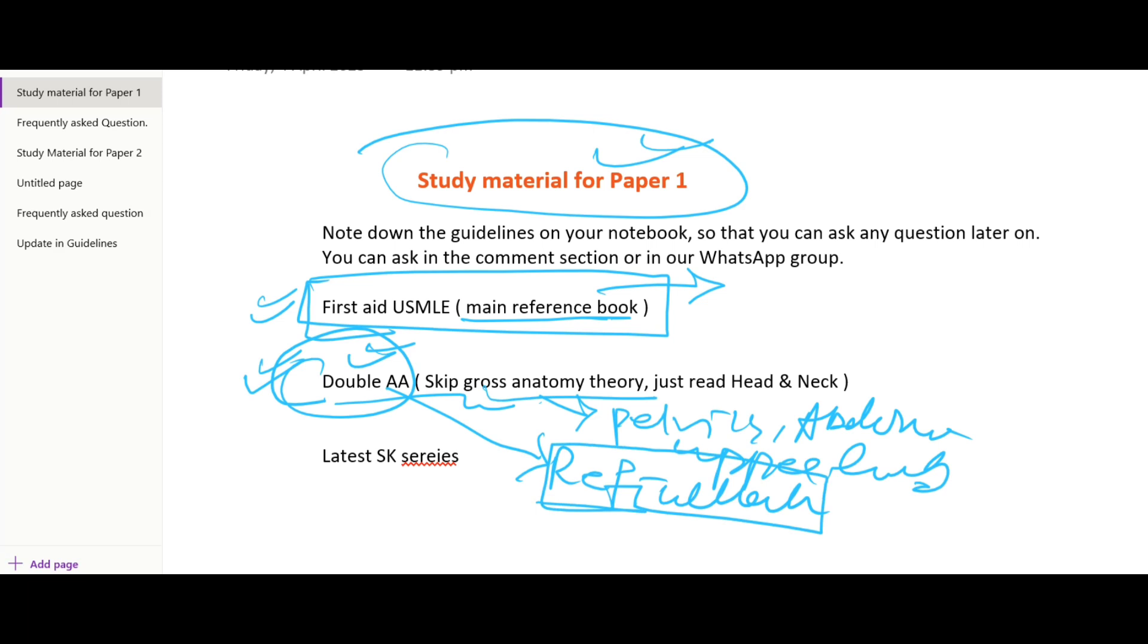But you should keep pelvis, abdomen, upper limb, lower limb. But you should study head and neck. Head and neck is very important for the eye paper.